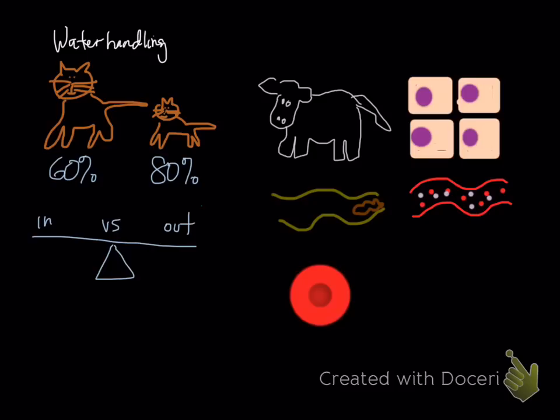When we talk about potential ins, we can all think about how much an animal drinks or eats as a typical in. But as veterinarians, we can give animals IV or sub-Q fluids, and those are different ins.